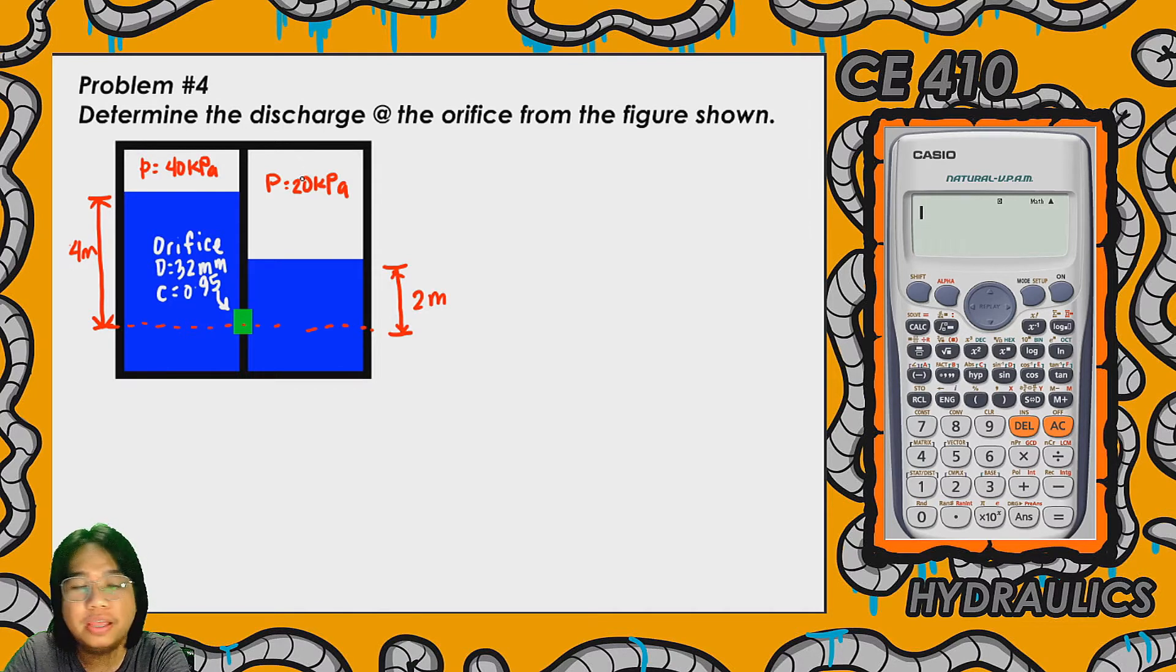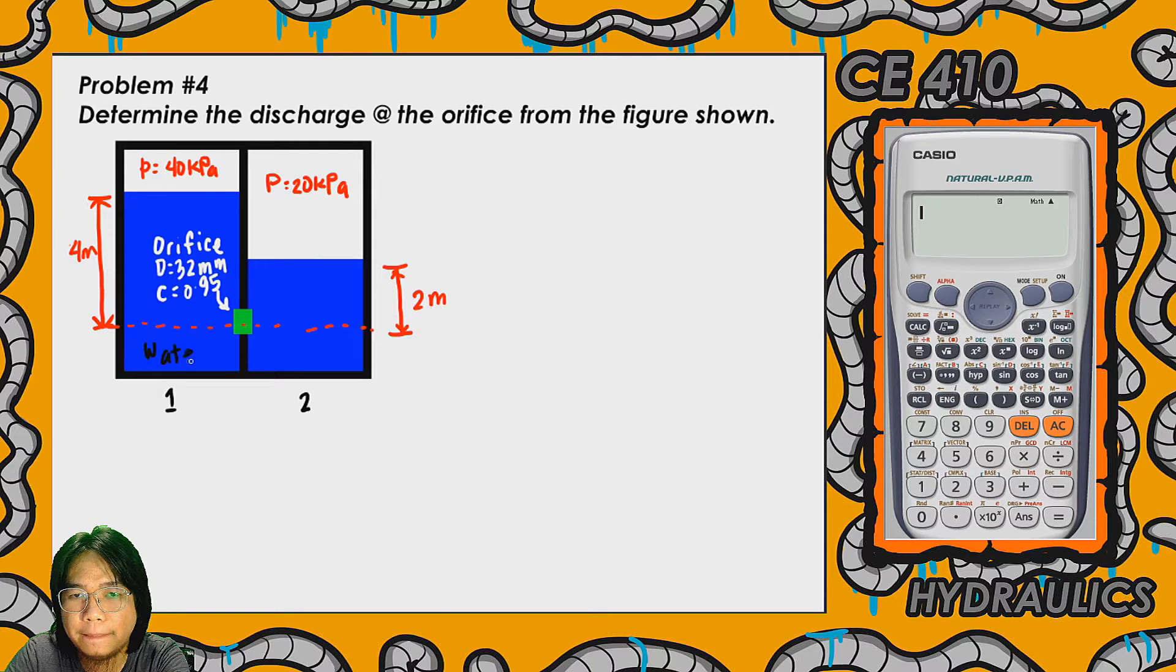As you can see in the figure, it is a closed tank. Inside the tank there is a partition separating 2 chambers. Let's denote this as chamber number 1 and this one is chamber number 2. The tank is filled with water.